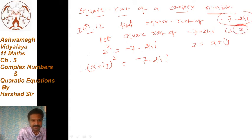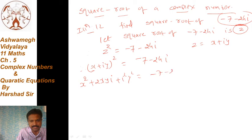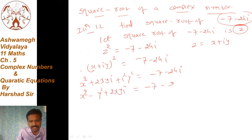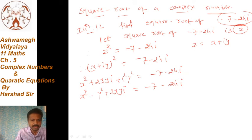दोस्तों, x and y ही find करना है। इसका जो square root है वो z है, तो z² यह होगा। (x + iy)² को expand करें: x² + 2xyi + i²y² = -7 - 24i. So: x² - y² + 2xyi = -7 - 24i.